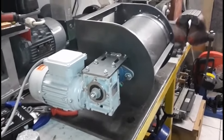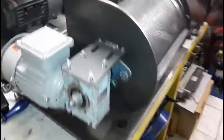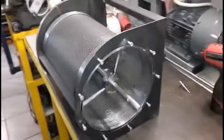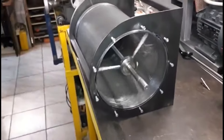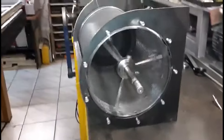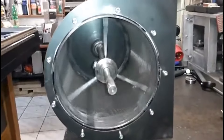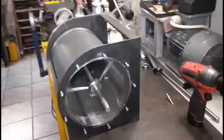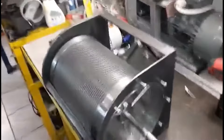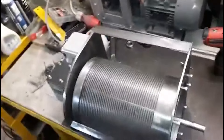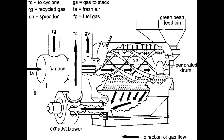Perforated drum roasters are similar to traditional drum roasters in that they also use a rotating drum to roast the coffee beans. However, the main difference is that the drum has perforations or holes which allow for better airflow and more precise temperature control.